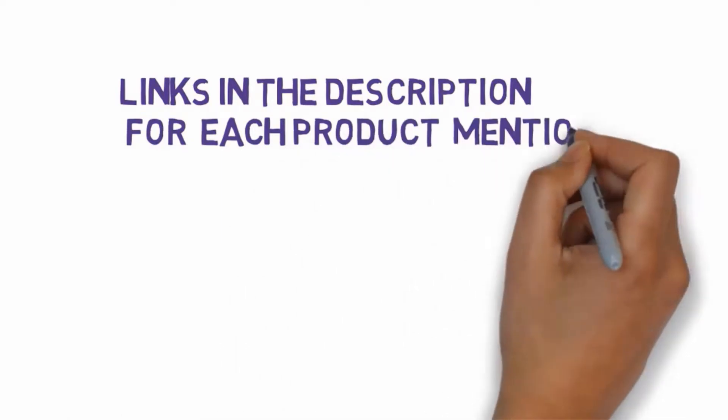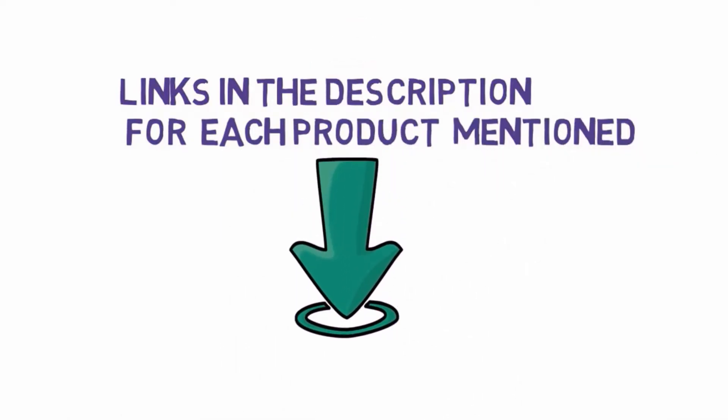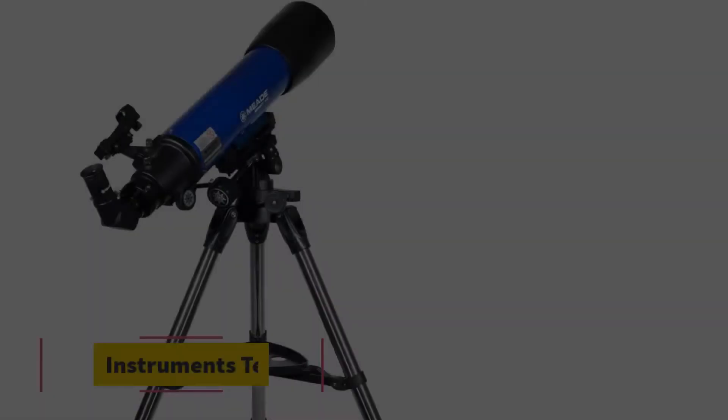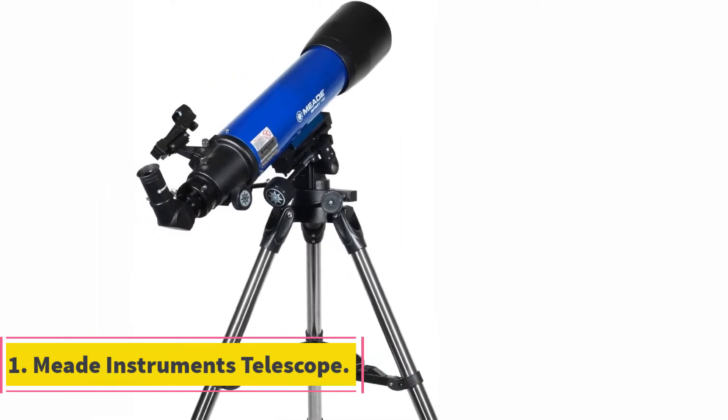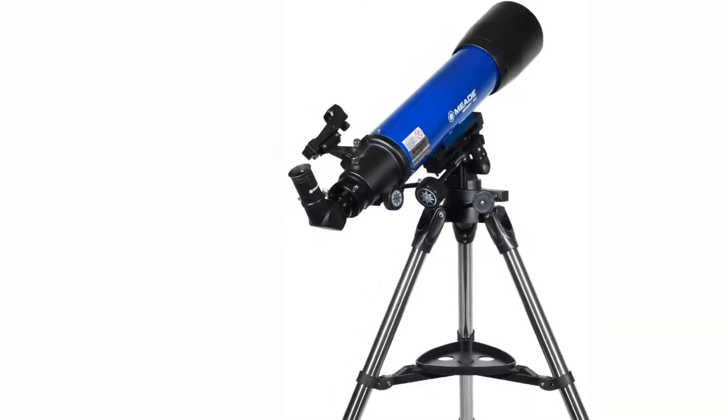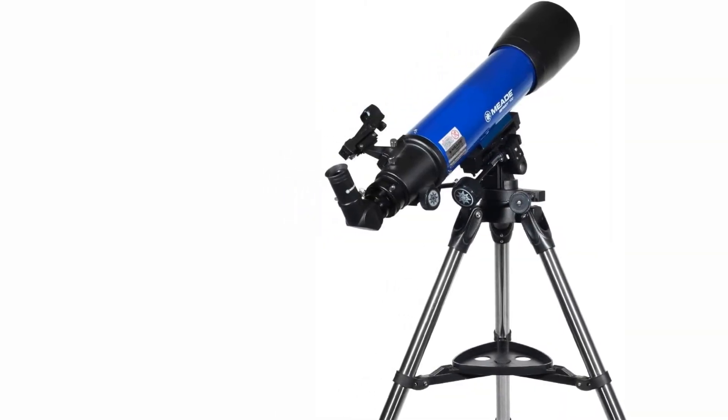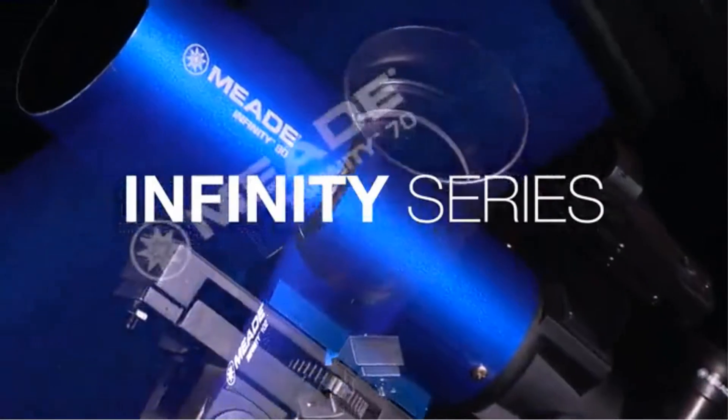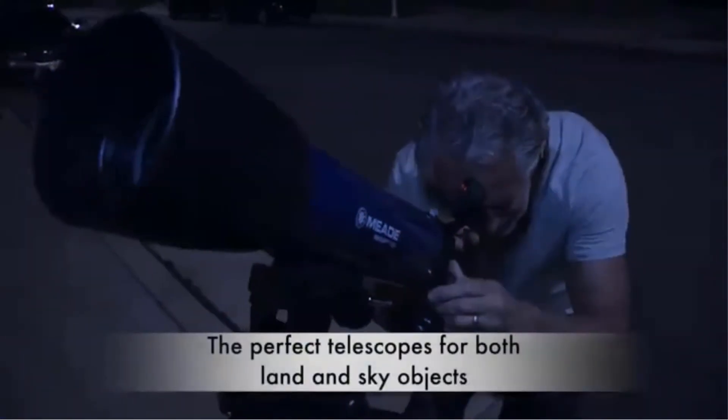So make sure you check those out to see which one is in your budget range. Starting at number 1, Meade Instruments Telescope. The Meade Instruments 209006 Infinity takes the day on our list. We chose this unit as our top pick because it is a great easy-to-use telescope and gateway to the world of stargazing.